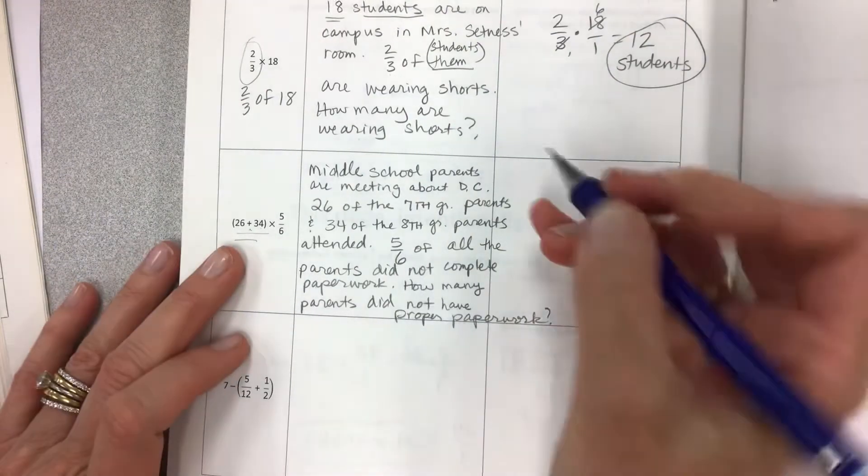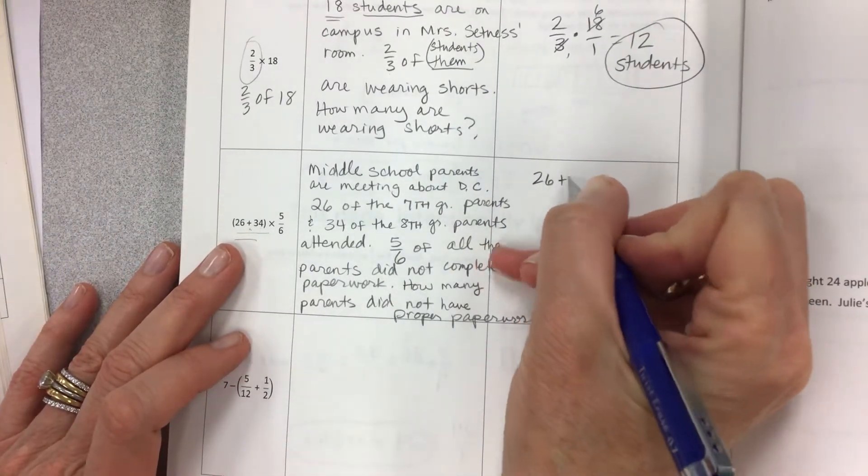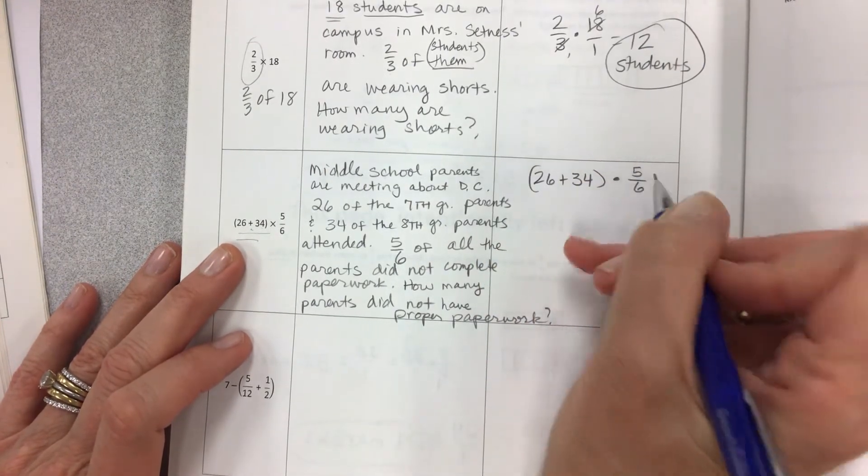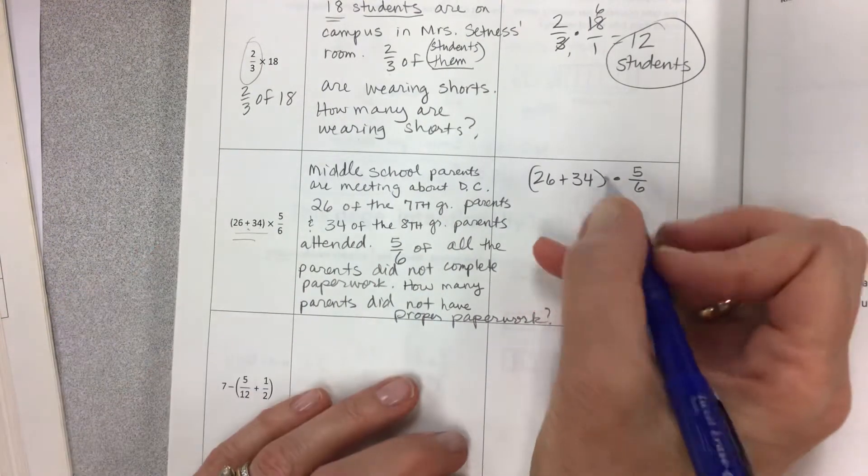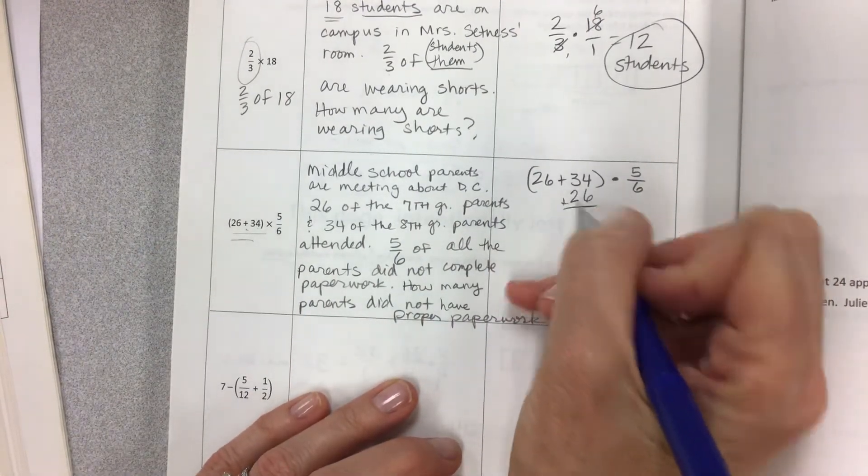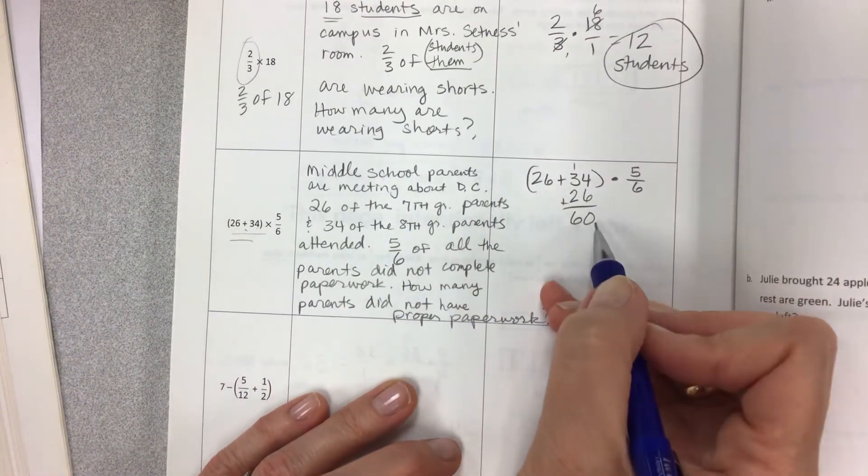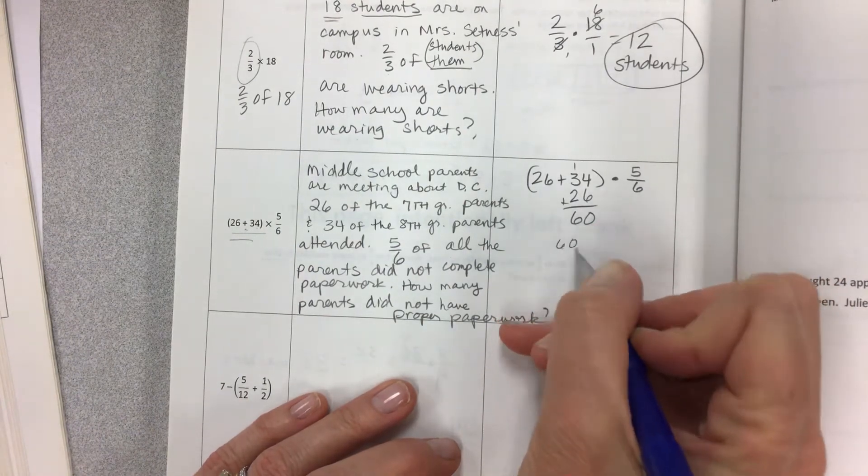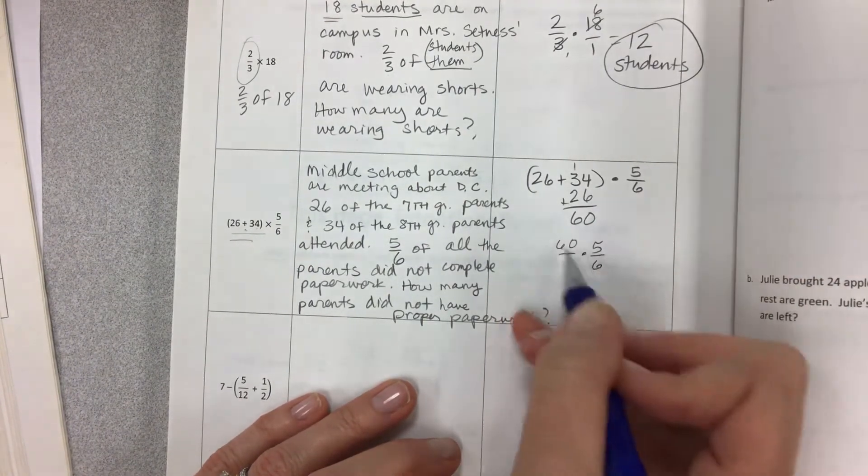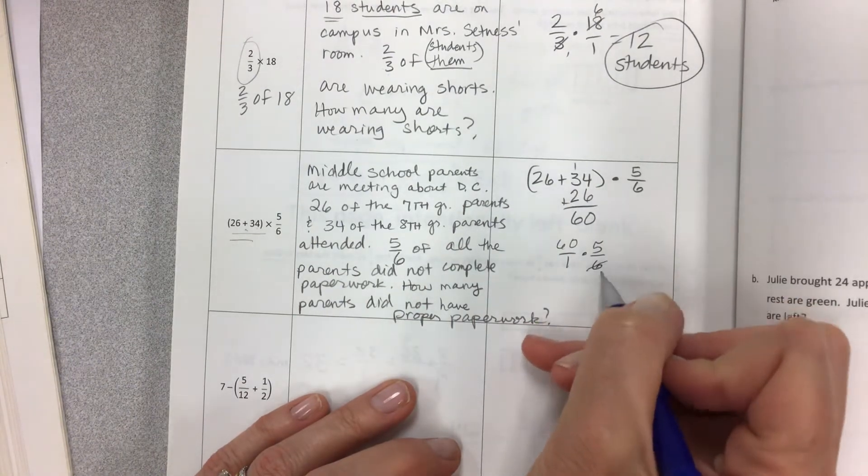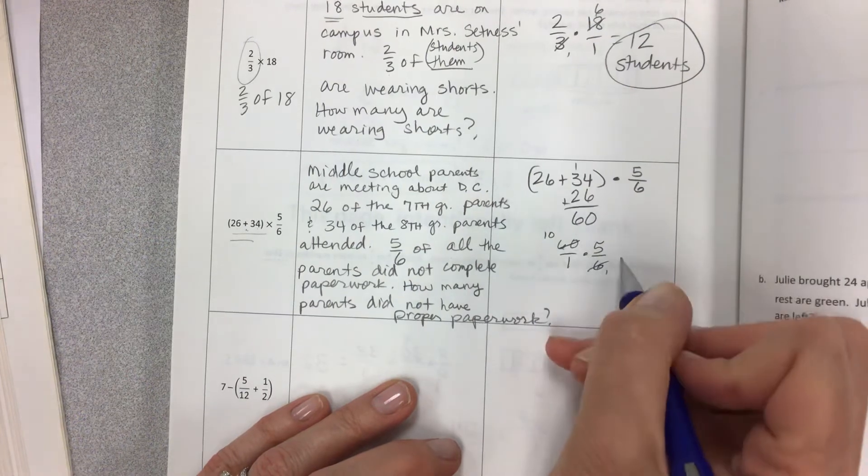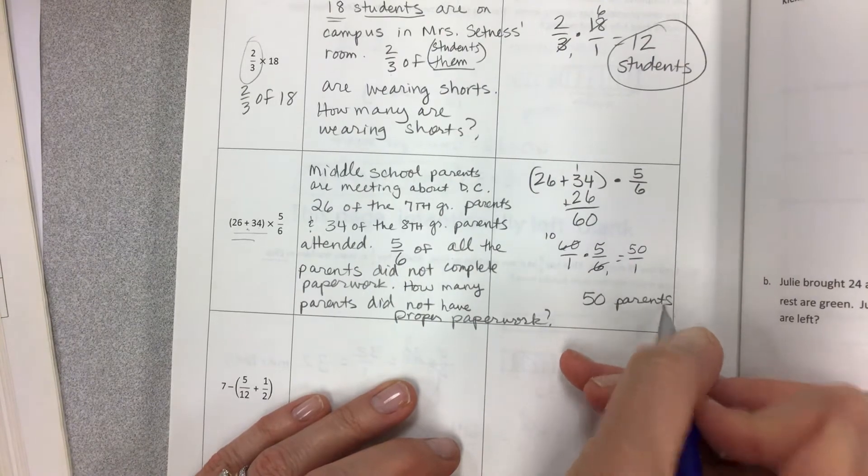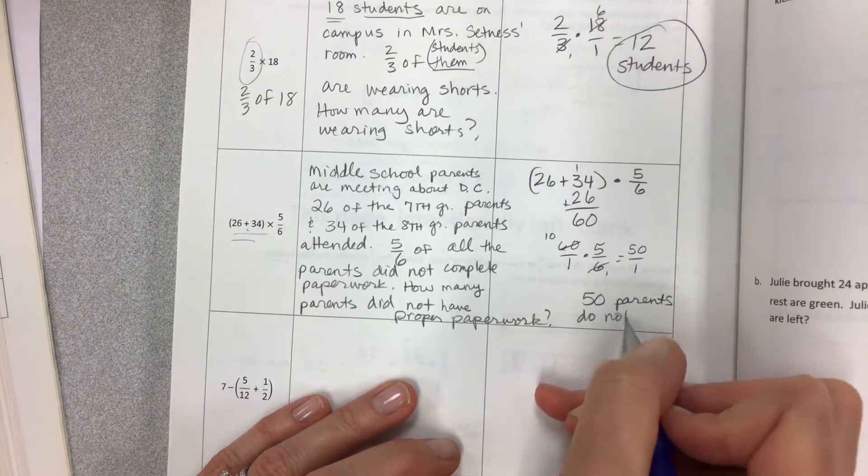We really need to do the addition first, because it's in parentheses. Then we're going to multiply it by five sixths. Sometimes I'll just get lazy and I just move things over. So we have 60, and so we're really taking five sixths of 60. And since I see that 60 and six are both very compatible, then I end up being able to cross cancel and I get 50 over one. And so it's 50 parents do not have paperwork.